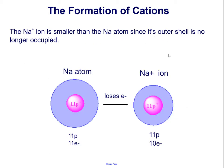The sodium ion is smaller than the sodium atom since its outer shell is no longer occupied. Having lost the valence electron, that outer shell is no longer there, so the ion is smaller than the atom.